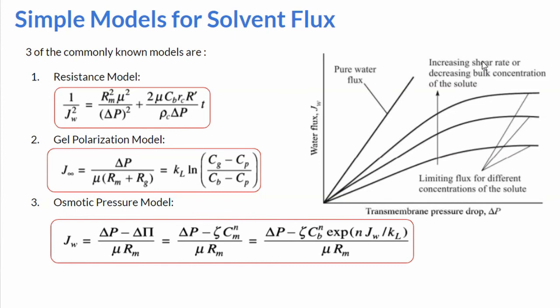Now we move to the topic of simple models for solvent flux. Pure water flux through a membrane linearly increases with applied pressure Δp. In the case of ultrafiltration, however, the increase of flux with pressure drop is slow and the flux levels off to a constant value at high Δp. This constant flux, which is independent of the resistance to flow offered by the membrane, is called the limiting flux. The limiting flux, as shown in the figure, increases with increasing cross-flow velocity or decreasing bulk concentration of the solute. Increasing cross-flow velocity enhances the mass transfer coefficient and reduces the solute concentration Cm in the vicinity of the membrane. A lower solute concentration in the bulk has a similar effect on the limiting flux.